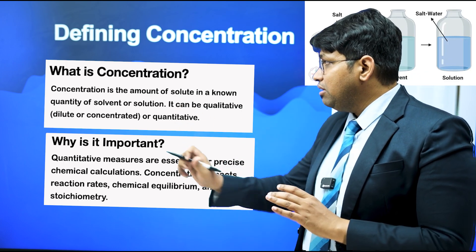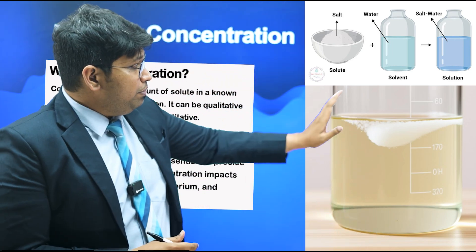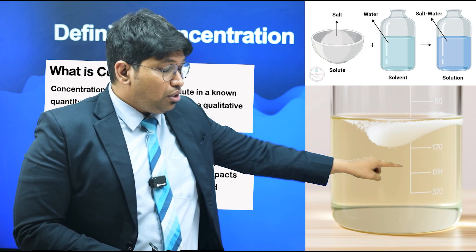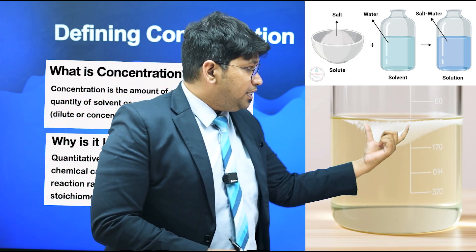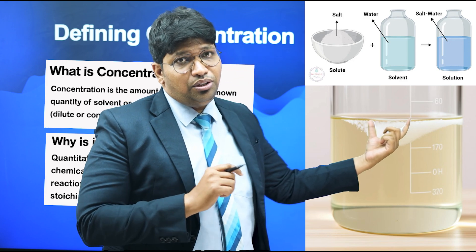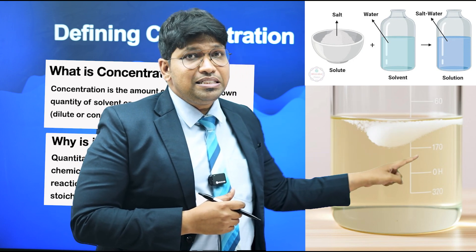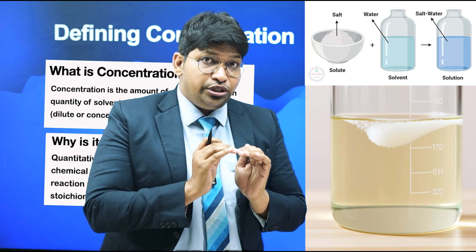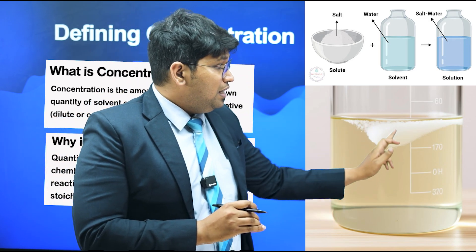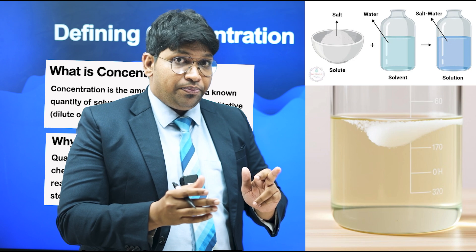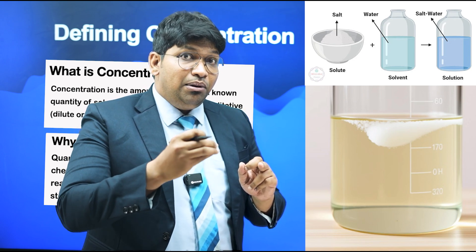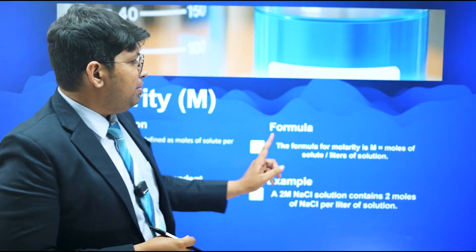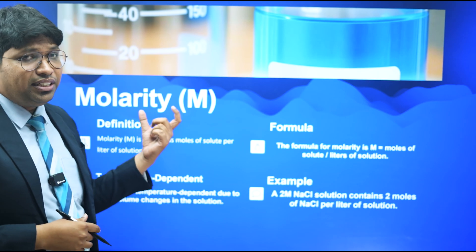There are two important parameters to remember: solute and solvent. Solute is the substance present in the larger amount, and solvent is the substance present in the lesser quantity. Solute plus solvent together form a mixture called a solution. The concentration of a solution tells us how much solute is present, and how a change in solute amount alters the overall concentration of the solution.